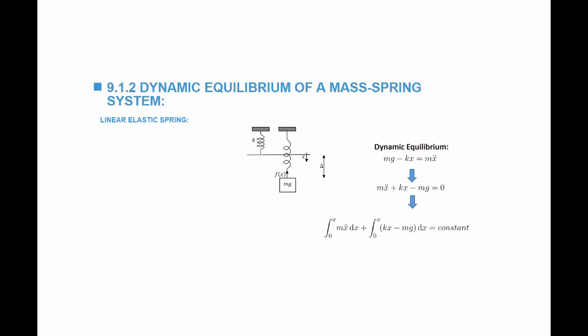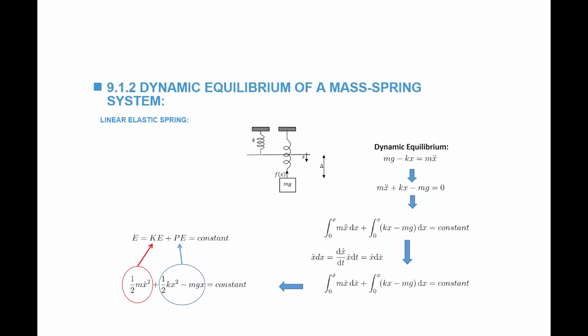We can also look at the energy of the system by integrating the equilibrium equation from 0 to x. Taking the equation of motion, integrating mx double-dot dx from 0 to x plus integrating kx dx minus mg dx, and since the equation equals zero its integration becomes constant. We replace x double-dot dx with x-dot dx-dot, and integrating yields: half mx-dot squared plus half kx squared minus mgx equals constant. The first term, half mx-dot squared, is the kinetic energy, and the second term, half kx squared minus mgx, is the potential energy of the system as defined in the static case.